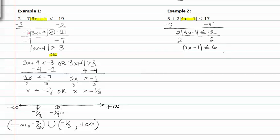Since it's less than or equal to, it's an and compound inequality. So we set up: 4x minus 1 is greater than or equal to negative 6, and 4x minus 1 is less than or equal to positive 6.